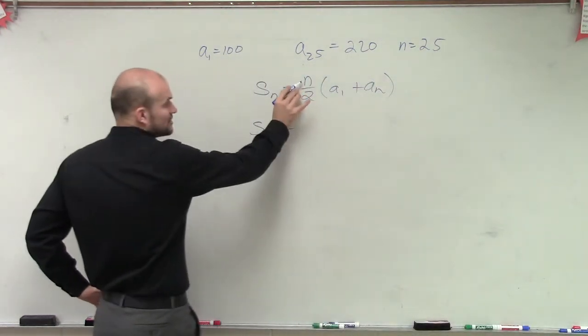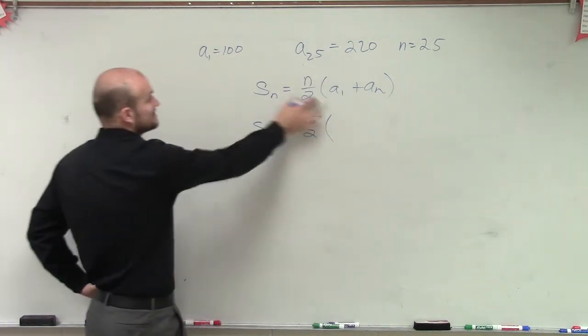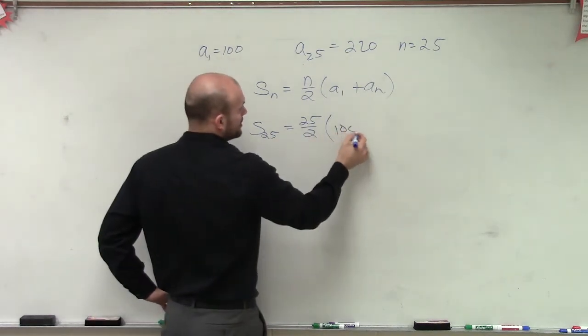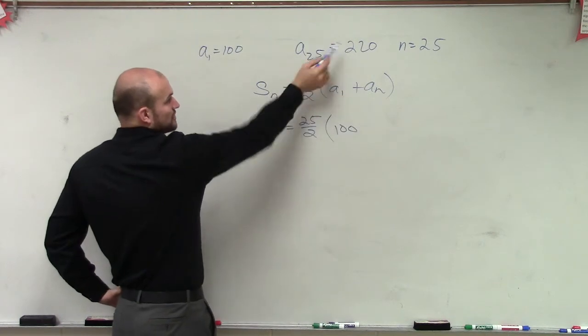We need to know how many terms, which is 25 over 2, times a sub 1, which they actually give us is 100, plus a sub n, which is a sub 25, which we know is 220.